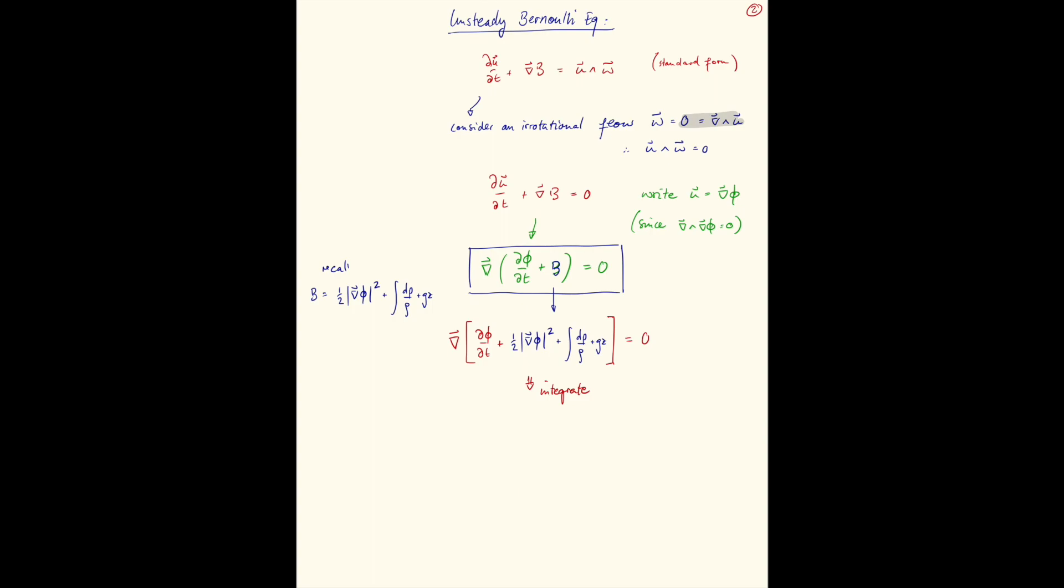This really is just b plus d phi dt. We can write this as d phi dt is a constant of integration b that might depend on the time t. But this new Bernoulli equation here, Bernoulli function, is independent, is constant in space.